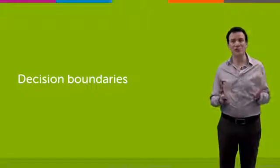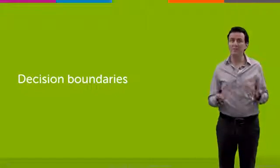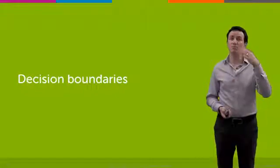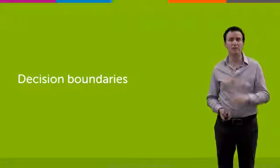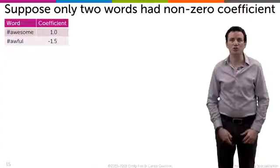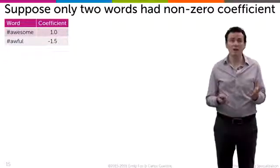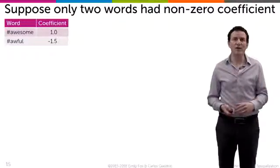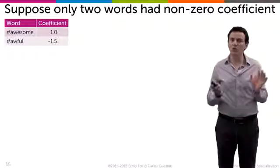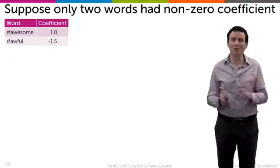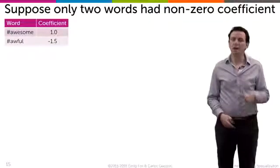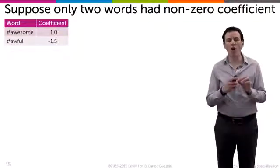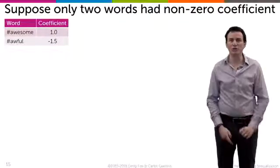In order to understand linear classifiers a little better, let's review the notion of decision boundary, which is the boundary between positive predictions and negative predictions. Let's say that I've trained a linear classifier and every word has zero weight except for two of them: "awesome" has weight 1.0 and "awful" has weight minus 1.5.